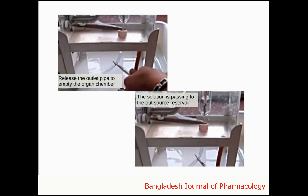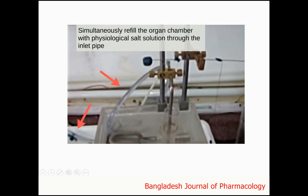Washing out of tissue is done by releasing the outlet pipe to empty the organ chamber; the solution passes to the outside reservoir. Simultaneously, refill the organ chamber with physiological salt solution through the inlet pipe continuously.